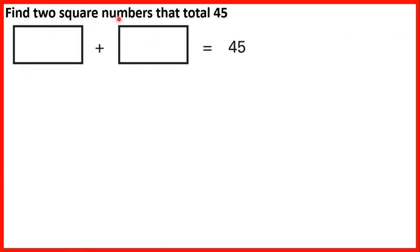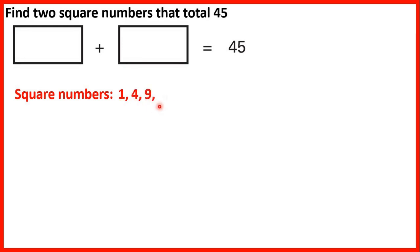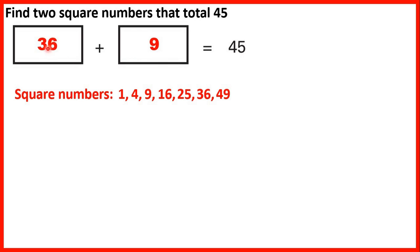Find 2 square numbers that total 45. Square numbers are what we get when we multiply a number by itself: 1, 4, 9, 16, 25, 36, 49, and so on. We need numbers that total 45, so we can have 36 and 9, and that gives an answer of 45. Both 36 and 9 are square numbers because they come from multiplying a number by itself.